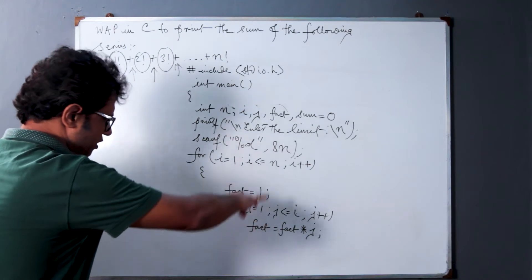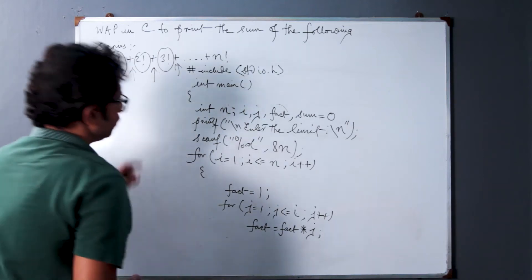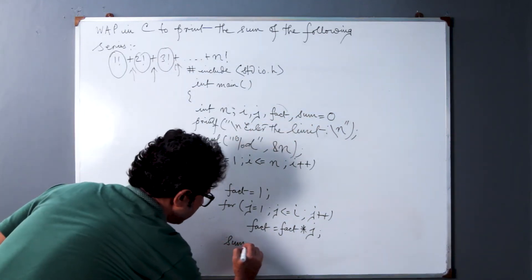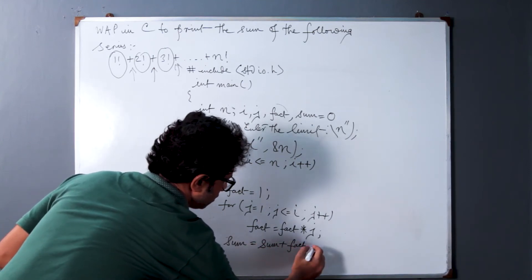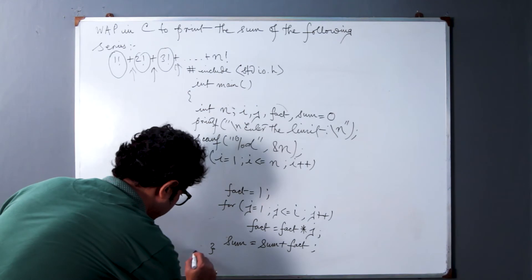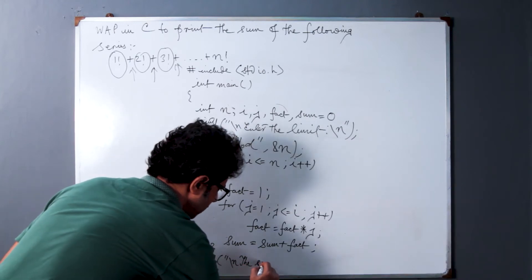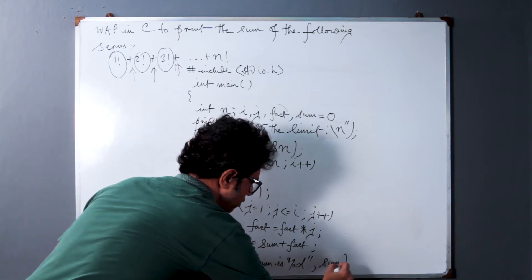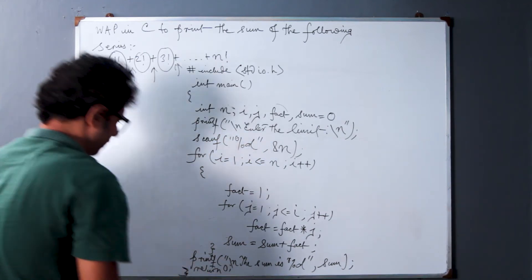Now we come out of the inner for loop and reach the last line of the outer for loop, where we calculate sum as sum equal to sum plus fact. Now we close the for loop and print the result: the sum is %d, sum. Return 0 and we end the main portion.